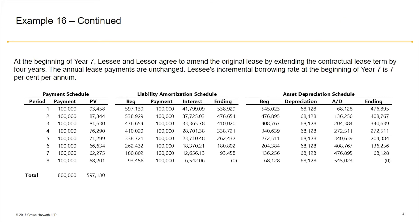At the beginning of year 7, the lessee and lessor agreed to modify the original lease by extending the contractual lease term by another four years. The annual lease payments are unchanged, but the lessee's incremental borrowing rate at the beginning of year 7 increases to 7% per year. We see the payment schedule equals $597,130. The lease liability amortization schedule in this case also equals the present value of future minimum lease payments for the modified terms.